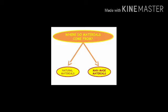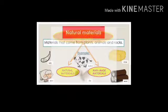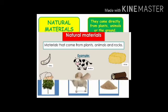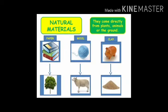Materials दो types के होते हैं: natural materials और man-made materials। Natural materials वो हैं जो हमें directly plants, animals, और minerals से मिलते हैं। Examples हैं wool, wood, straw, ivory — जैसे paper हमें trees से मिलता है, wool sheep से मिलती है, और clay soil से मिलती है।